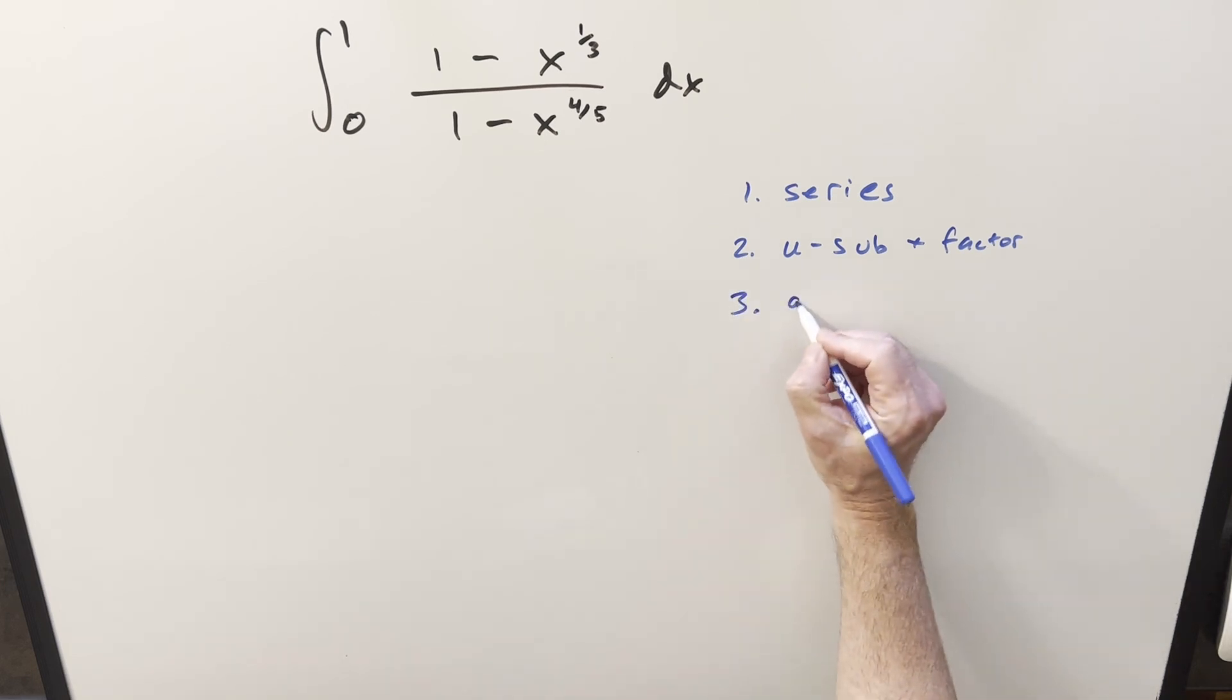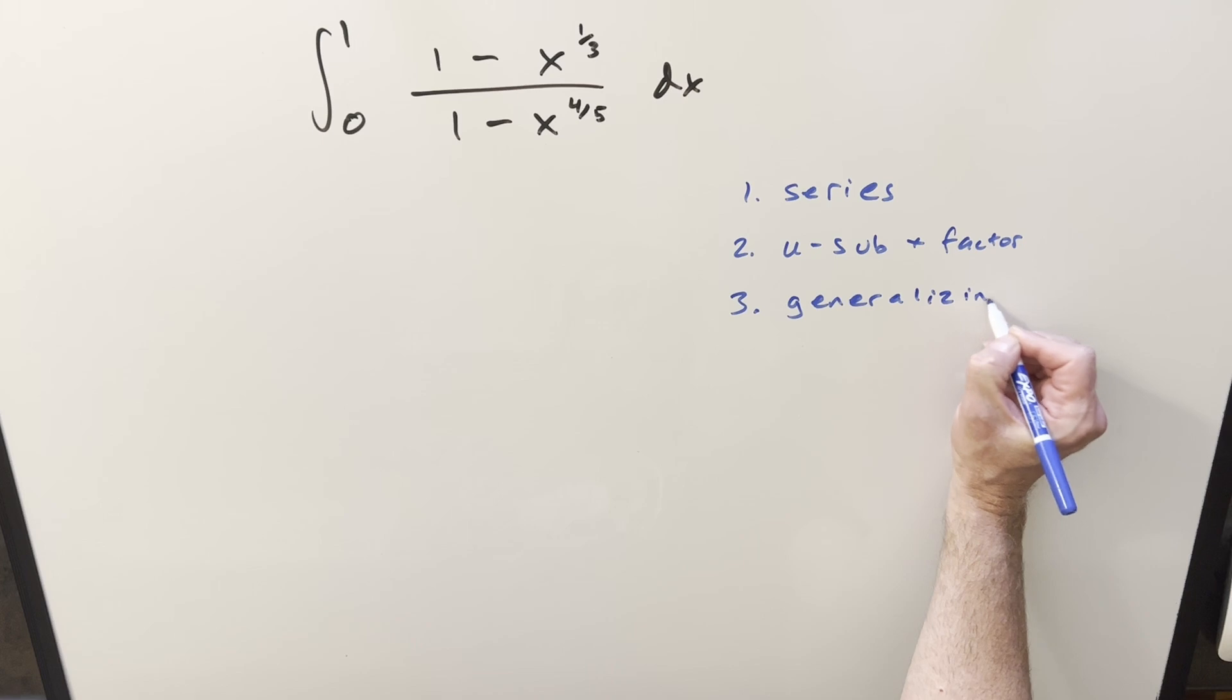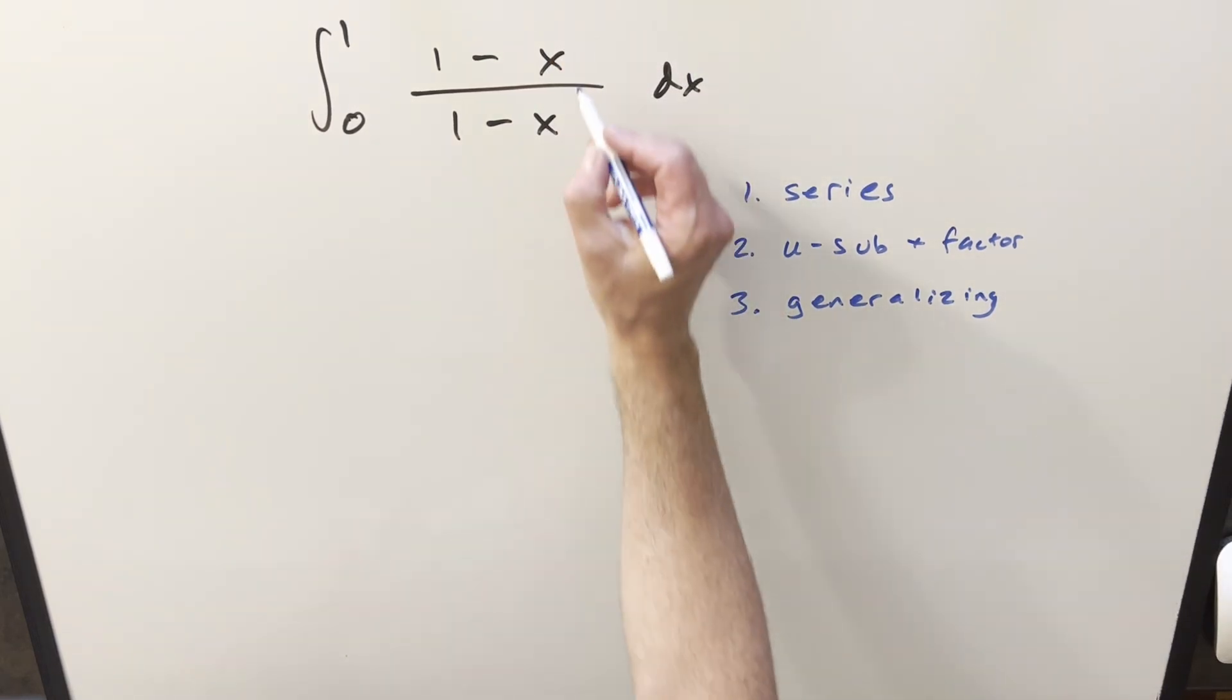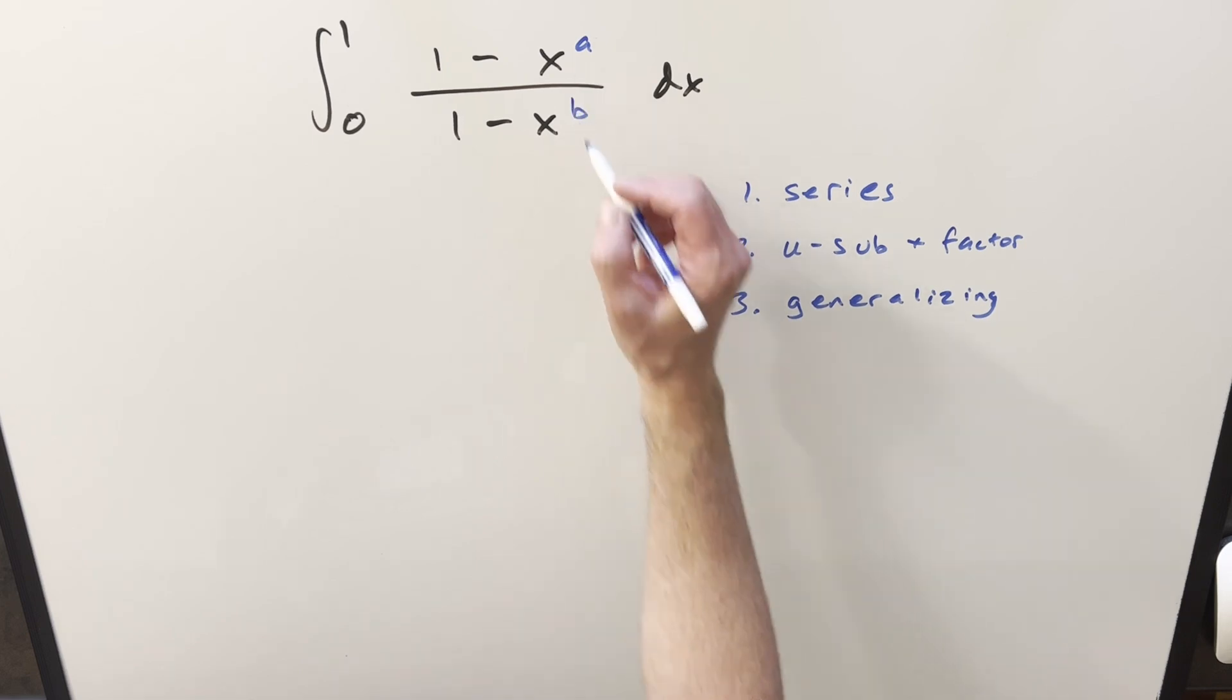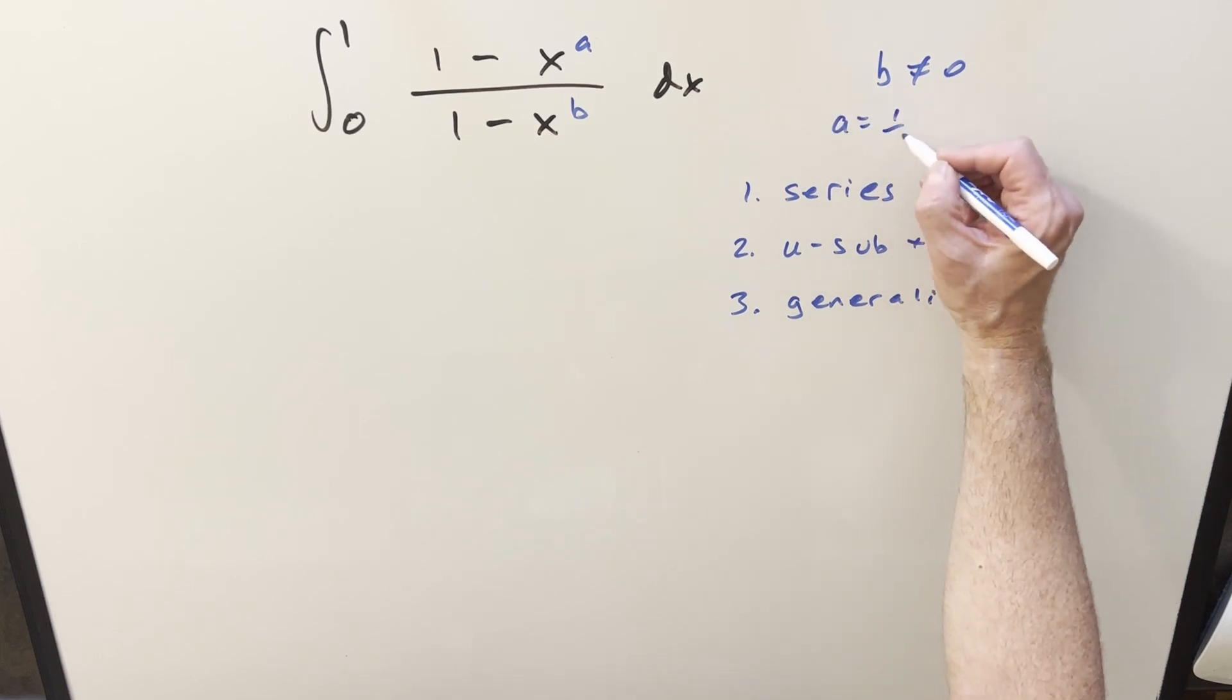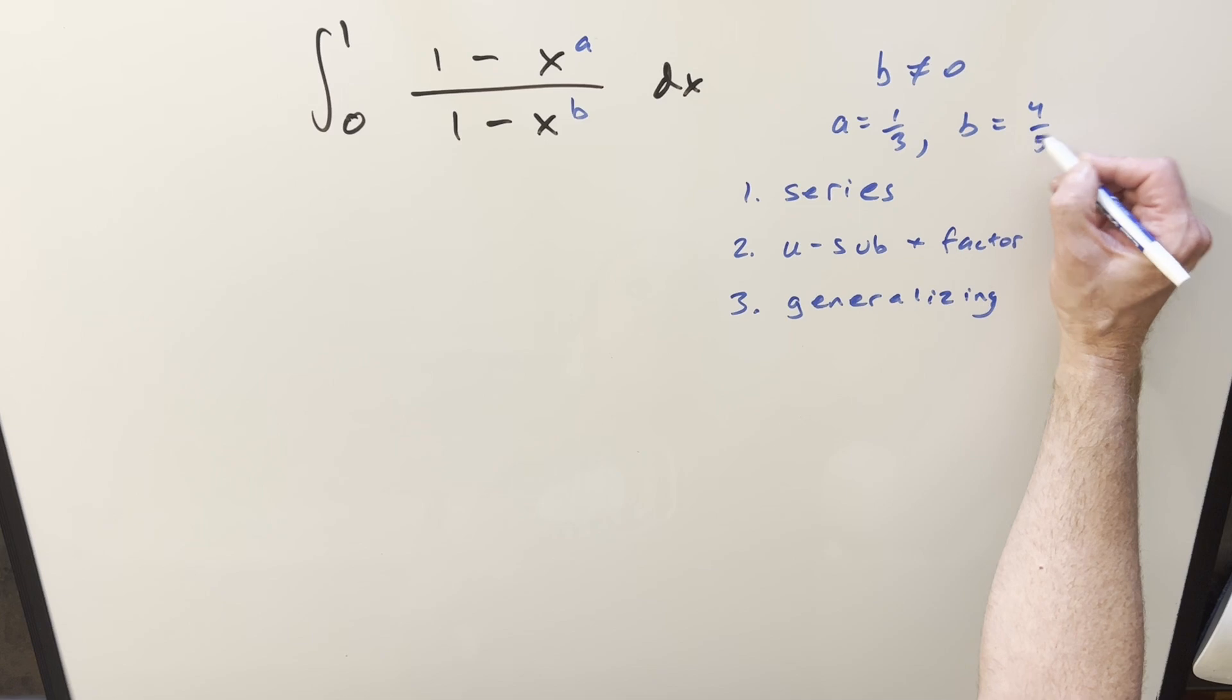But for the third method, what I want to do is kind of generalize this. And the actual methods I use when doing it are probably going to be similar to the second one. But what we can do is get rid of the exponents on this, and find a general formula for this, setting the exponents to a and b. We need b not equal to 0. But for our problem, we've already determined we want a equal to 1/3, and we want b equal to 4/5.